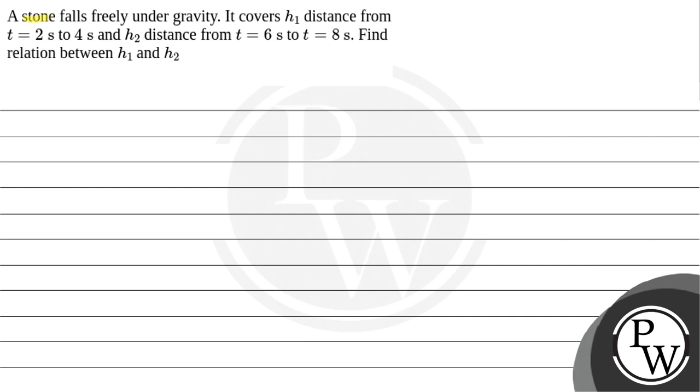Let's read the question. A stone falls freely under gravity. It covers h1 distance from t equals 2 seconds to 4 seconds, and h2 distance from t equals 6 seconds to 8 seconds. Find the relation between h1 and h2. So here, our key concept is motion under gravity.